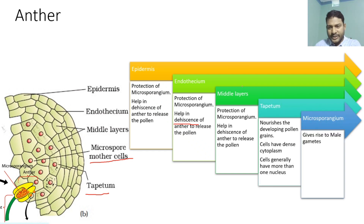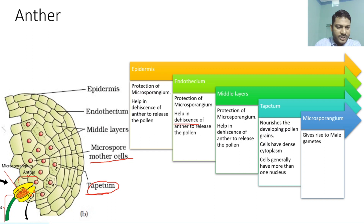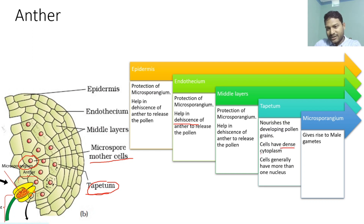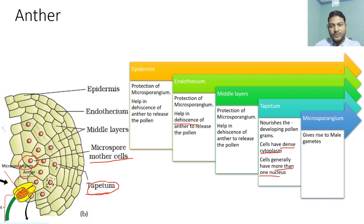The last layer is the tapetum. Tapetum is slightly different — it is very important in the sense that it is nutritive in nature. It nourishes the developing pollen grains. The cells here are going to have dense cytoplasm and typically more than one nucleus; they can be in a binucleate condition. The microspore mother cell is going to give rise to the male gametes, that is the microsporangium.